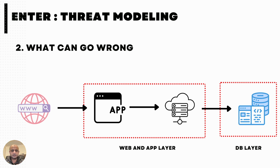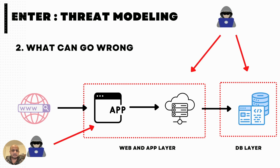STRIDE is a threat categorization methodology of things that can go wrong in security. It stands for Spoofing, Tampering, Repudiation, Information Disclosure, Denial of Service, and Elevation of Privilege. Don't worry about all those things right now. Just know that now that we have a high level idea of the application, we can think about threats.